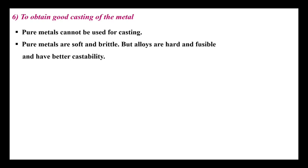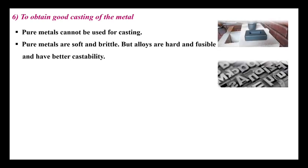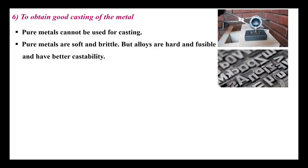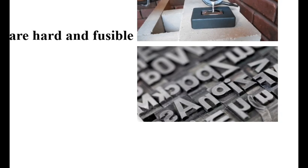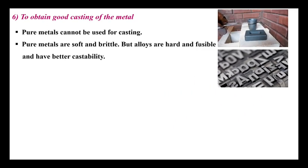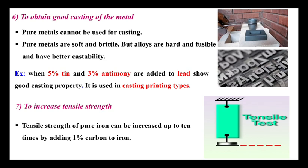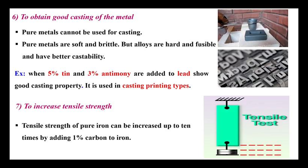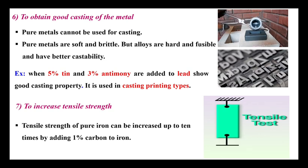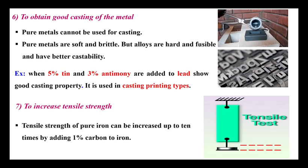The sixth point is to obtain good casting of metal. Pure metals cannot be used for casting because they are soft and brittle. Alloys are harder, more fusible, and have better castability, making them suitable for casting purposes. For example, when 5 percent tin and 3 percent antimony are added to lead, it shows good casting properties, and printing type is made through these alloys. The seventh point is to increase tensile strength: adding 1 percent carbon to iron increases the tensile strength of that alloy.